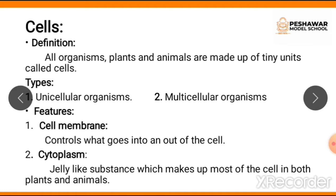Let's start with the first feature: cell membrane. What is the function of cell membrane? It controls what goes into and out of the cell. It allows useful things to come inside and keeps out anything that is harmful for the cell.